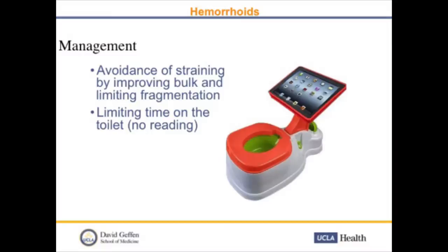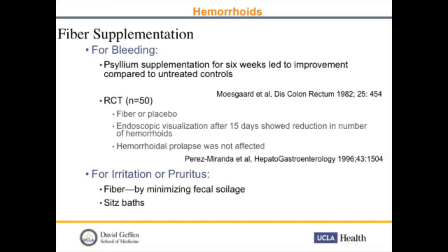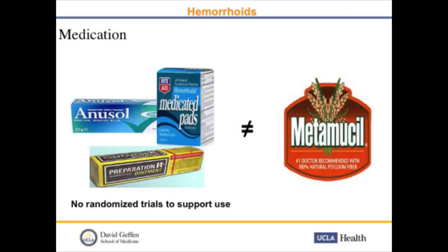I counsel my patients about avoiding straining by improving bulk and limiting fragmentation, and limiting their time on the toilet — no reading. Fiber supplementation works well for bleeding; randomized controlled trials have shown improvement. It works as well for irritation or pruritus. There have been really no randomized trials to support use of Anusol or Preparation H, so I ask patients to refrain from using those except for an acute flare — not for prolonged use. Some patients actually come to me with irritation from overuse of these medications.